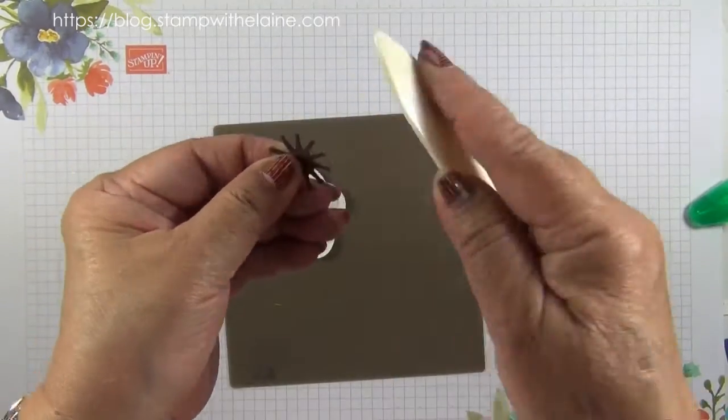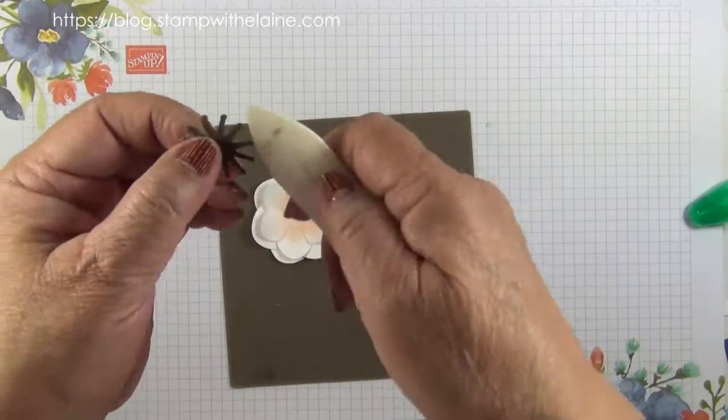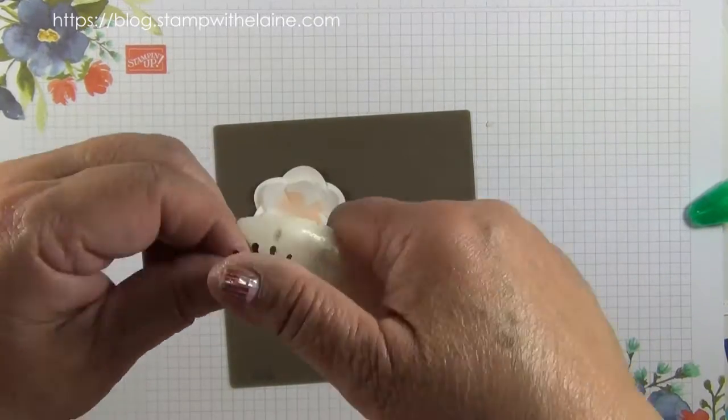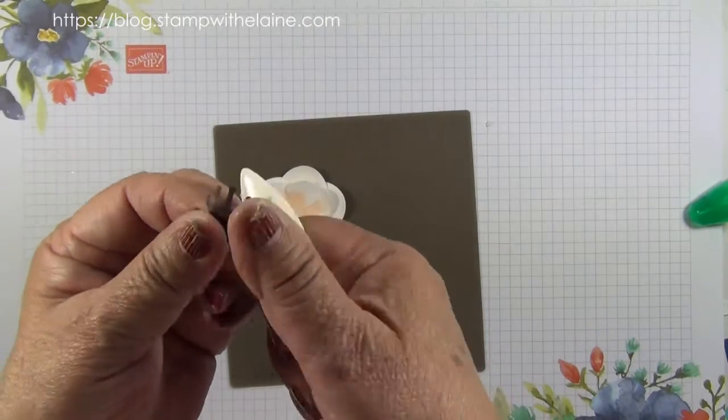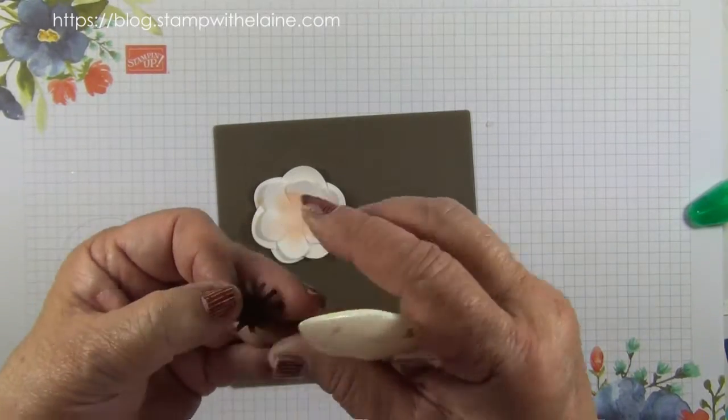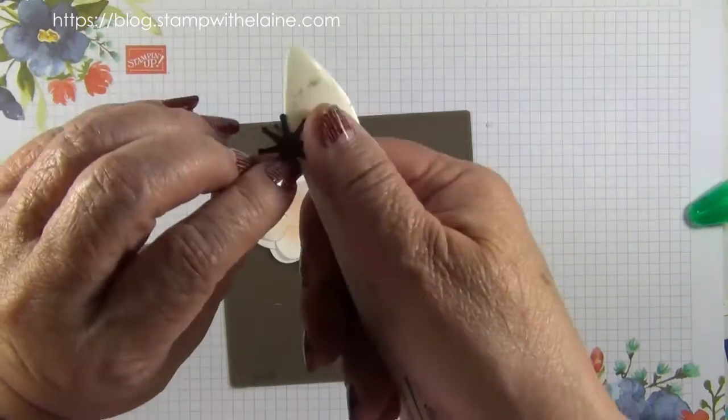Next you want to curl these as well. So turn it upside down, use your bone folder, and be gentle with it because you can break the stamens. You don't want to do that. Same with this little one.